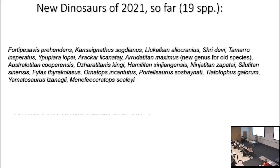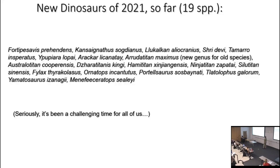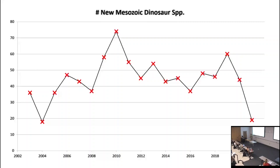We've had 19 new species so far this year. It's been challenging — even though a lot of us haven't been able to go in the field, you might think you could spend more time in the lab. But I've got colleagues who are museum workers who haven't been to the lab since March of last year. Since 2003 I've been noting the number of new Mesozoic dinosaur species per year, and you can see the average is in the mid-40s — some years really good, some less so.